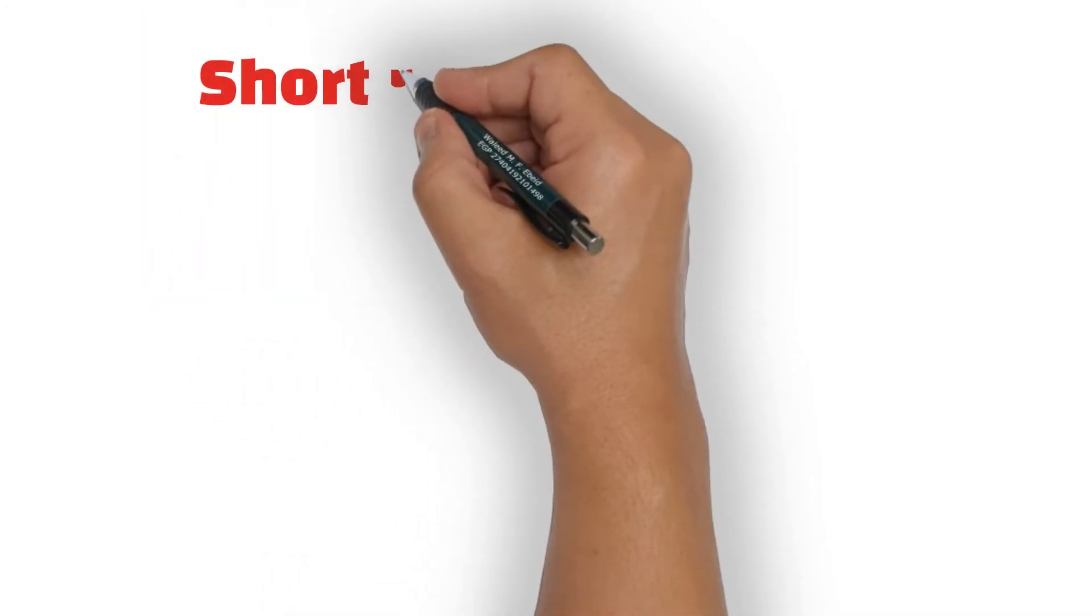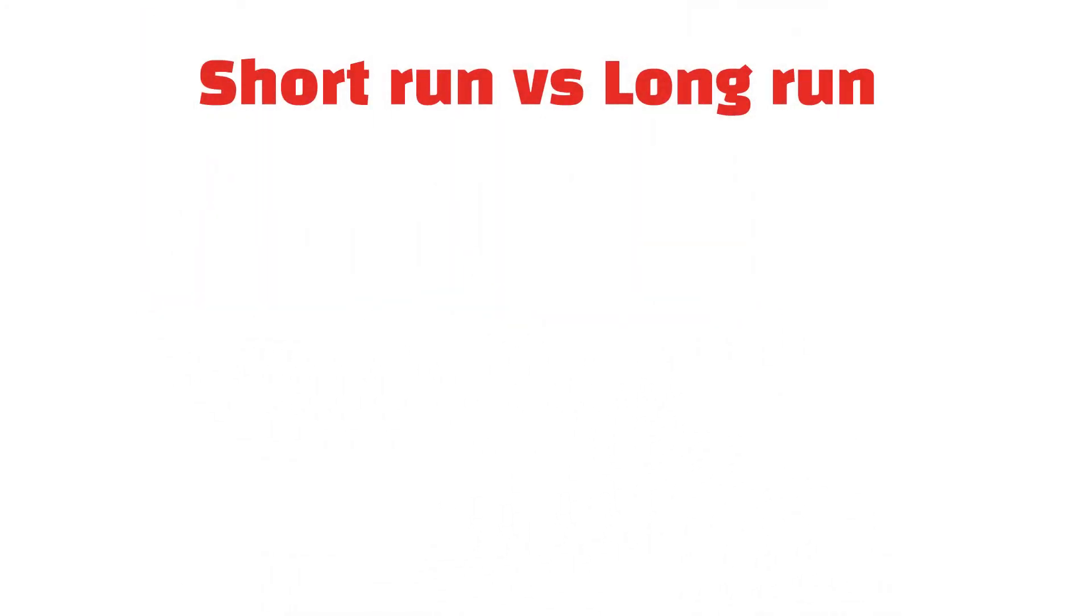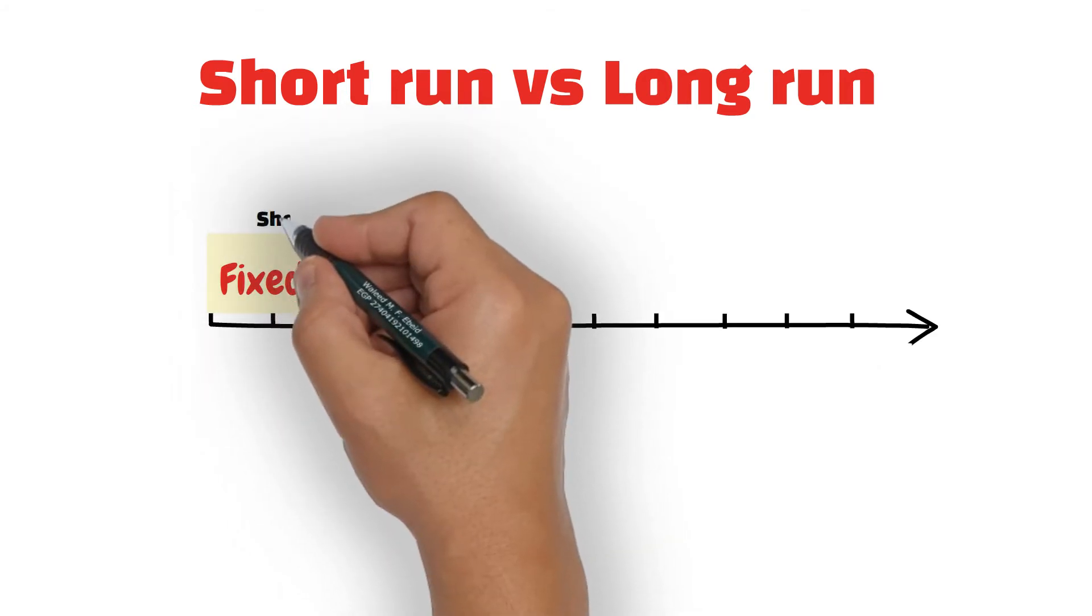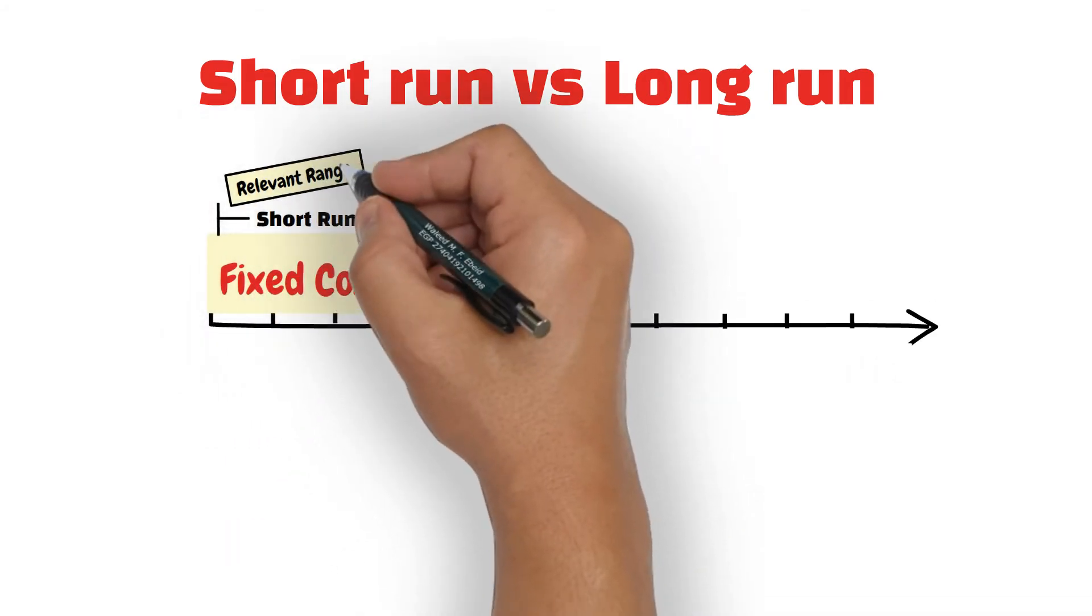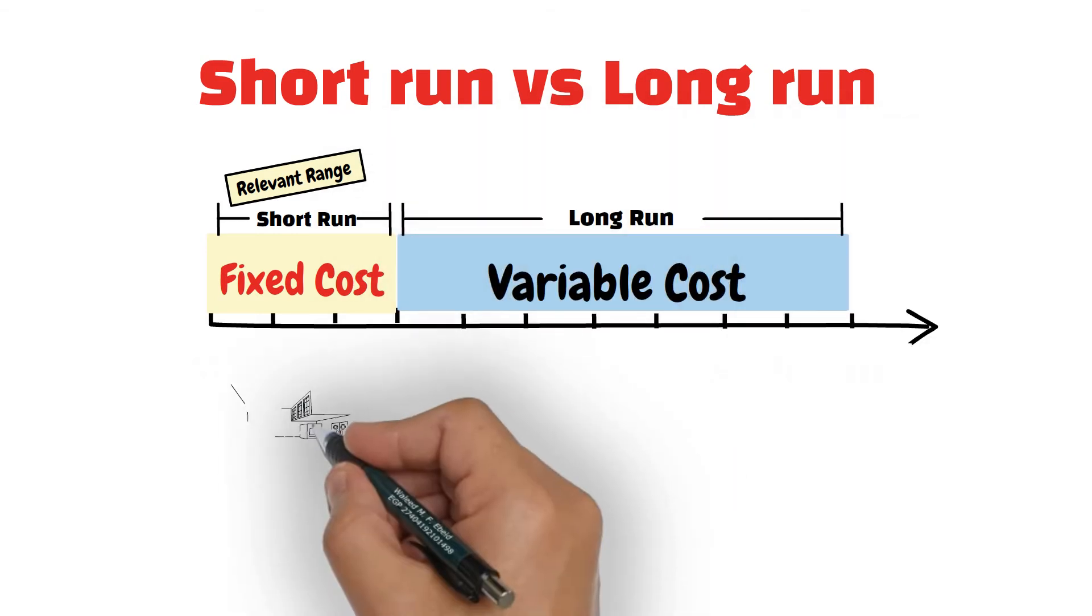Third, costs in the short run versus the long run. A cost might be fixed in the short run, also called the relevant range, but becomes variable in the long run.